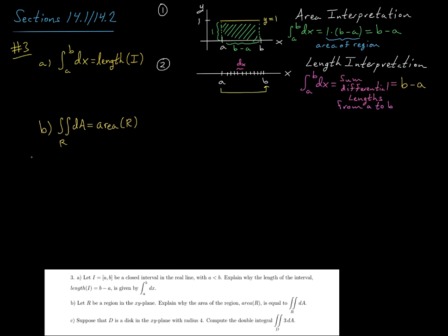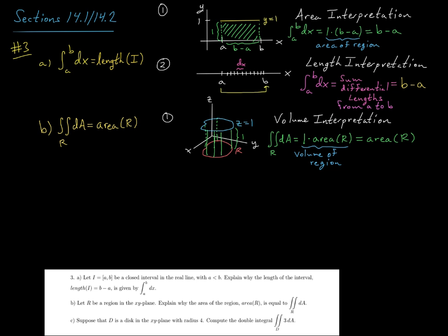Okay, so we've been talking about double integrals now in terms of volume. Okay, so one interpretation here, which is directly analogous to our first interpretation up here in part a, is to say, well, this double integral is telling us the volume of this following region, right? So our integrand is just one.